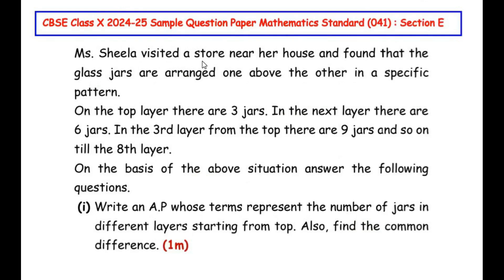Miss Sheila visited a store near her house and found that glass jars are arranged one above the other in a specific pattern. On the top layer there are three jars, in the next layer there are six jars, and in the third layer from the top there are nine jars, and so on till the eighth layer. The first sub-question asks: write an AP whose terms represent the number of jars in different layers starting from the top, and also find the common difference.